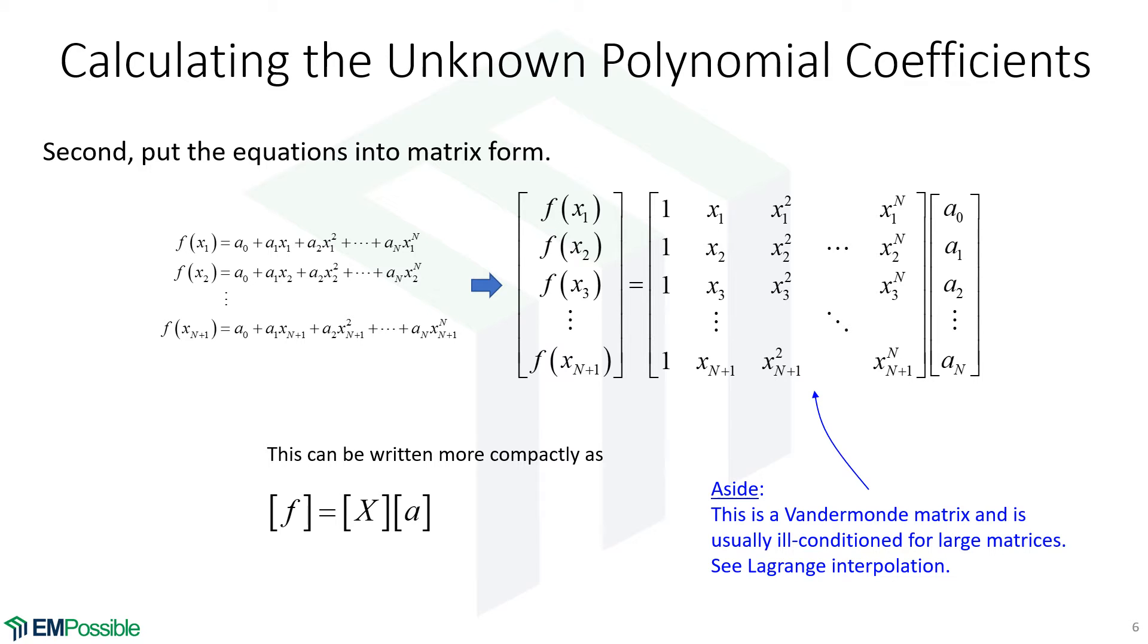Just as an aside, this matrix X is actually called a Vandermonde matrix. And it's very known for being ill-conditioned for large matrices. And by large matrices, we're talking maybe 100 by 100 or larger than that. When we're fitting polynomials, we're going to have very small matrices. And so in this course, we'll never encounter a problem. But if off on your own, you're ever using large matrices of that form, you will have some problems. And I'm just pointing you to something called Lagrange interpolation to help fix that. Won't be a problem here for us because this matrix will be very small for us.